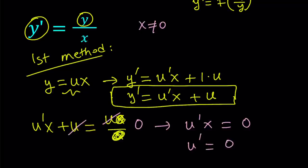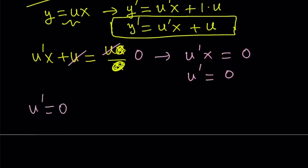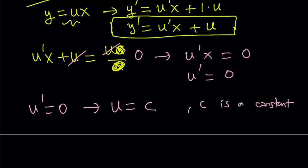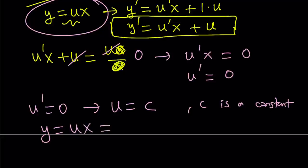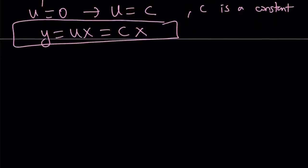That's interesting. If the derivative of something is zero, that implies that thing is a constant, because the rate of change is just zero. So u equals c, where c is a constant. We've found the value of u, but we're looking for y, and y equals ux. Therefore y becomes cx, because u equals c. This gives all solutions where c is a constant — and if c equals zero, y equals zero is also a specific solution.